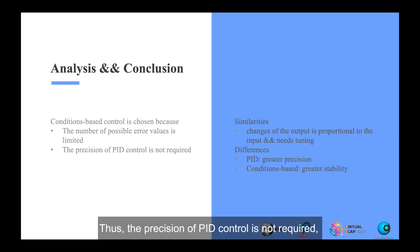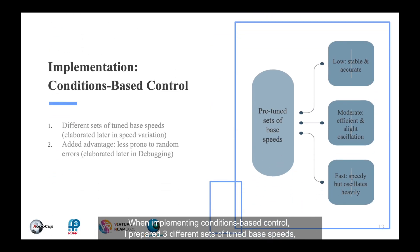Thus, the precision of PID control is not required, and conditions-based control can already cover all possible scenarios. When implementing conditions-based control, I prepared three different sets of tuned base speeds, which leverage the power of path planning to reduce the effect of random errors on the robot.